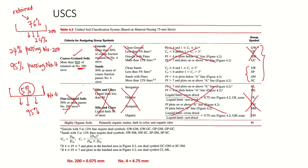Sand is fulfilled because 50% or more of the coarse fraction passes sieve number 4. We have 95%, which is more than 50%, so the soil is sand. Next, we identify whether it is clean sand or sand with fines.